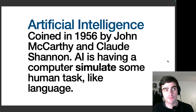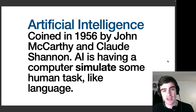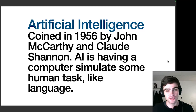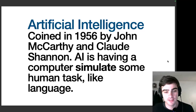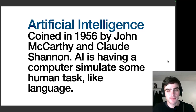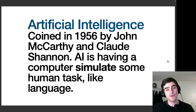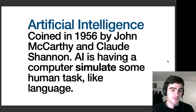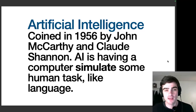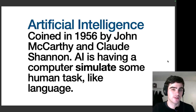John McCarthy is famous for developing the first functional programming language called LISP. And Claude Shannon is a mathematician who came up with the language model. They convened with a number of other researchers at Dartmouth in the summer of 1956 for a workshop on what they were calling artificial intelligence. In this workshop, they coined artificial intelligence to mean simulating a human doing something — their example was calculating. So AI was to simulate how a human might calculate numbers or language. The whole idea is that AI is to simulate, to emulate, to mock.